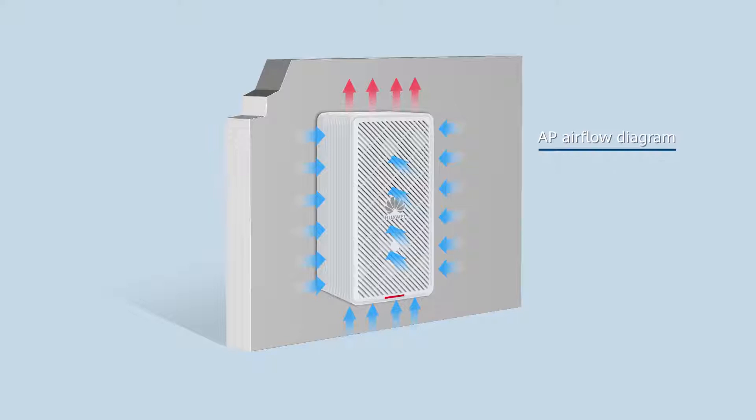Ensure that the wall plate AP is mounted upright, but do not mount it on the ceiling. Reserve at least 200 mm clearance around the AP, including its top and bottom, to ensure heat dissipation.